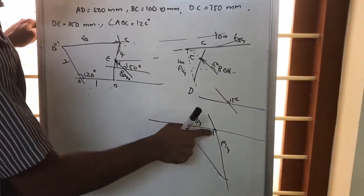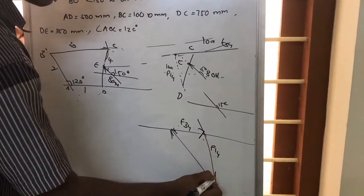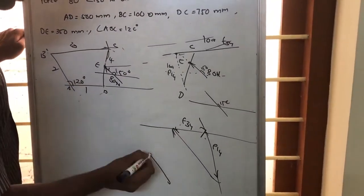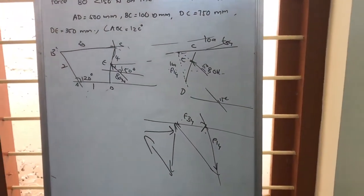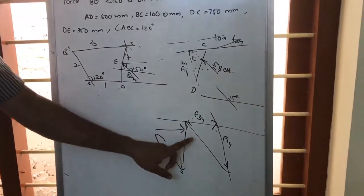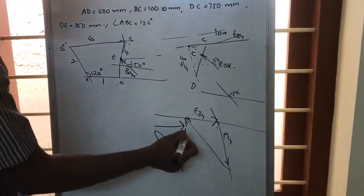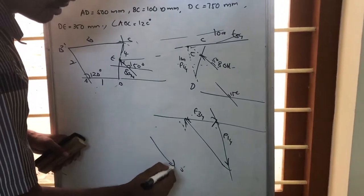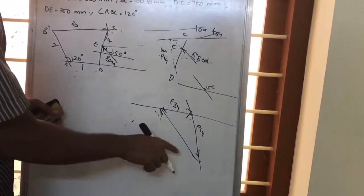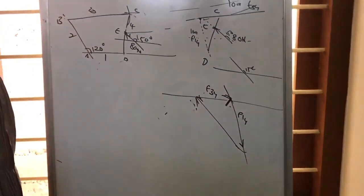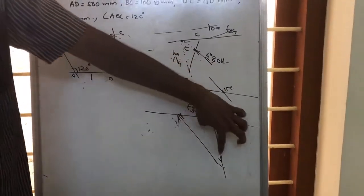For this to be in equilibrium, if this arrow is in one direction, the other force arrows must close the triangle. Looking at the arrow directions, we have a clockwise arrangement. By looking at the 80 Newton arrow direction, we can represent these two forces F34 and F14 in a force diagram.